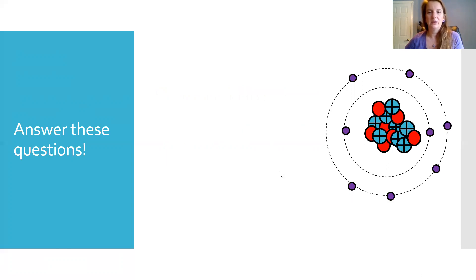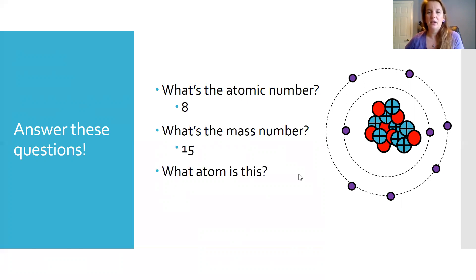And let's do the same thing on this one. The atomic number, we count the protons. One, two, three, four, five, six, seven, eight. So there's eight protons. The mass number, we add in the number of neutrons. So we have one, two, three, four, five, six, seven neutrons. So the mass number is 15. And that atom would be oxygen.